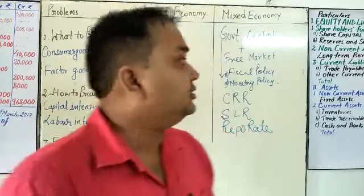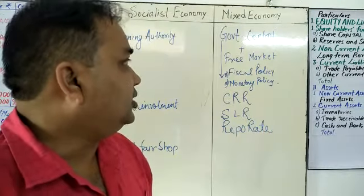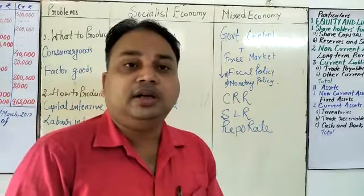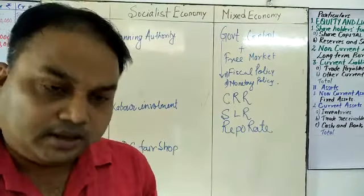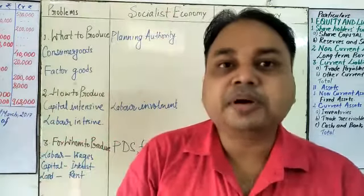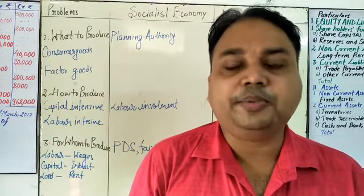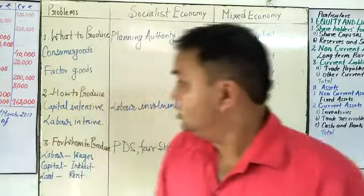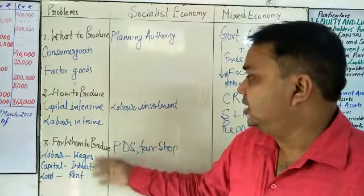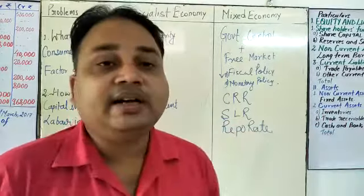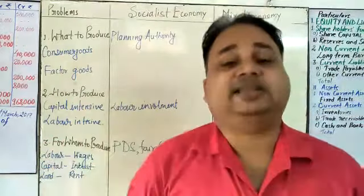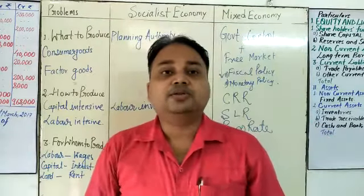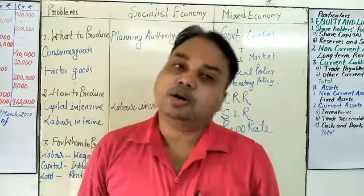What to produce in mixed economy is decided by both the government and the free market. How to produce: in free market competition, private entrepreneurs utilize maximum capital intensive techniques, but the government tries to utilize labor intensive techniques. For whom to produce: whatever national product is converted into national income, it takes the form of wages, rent, etc., decided by either the free market or the government.